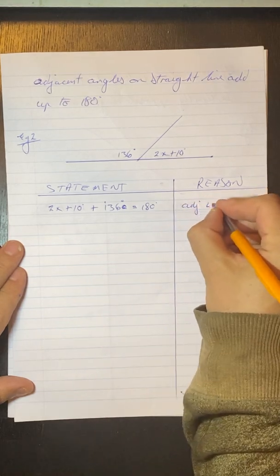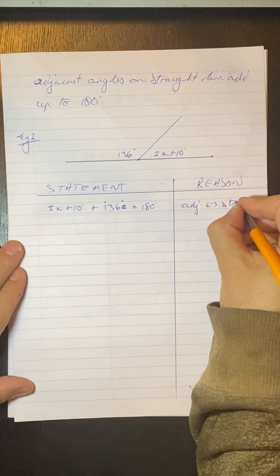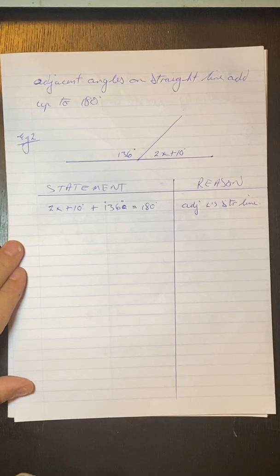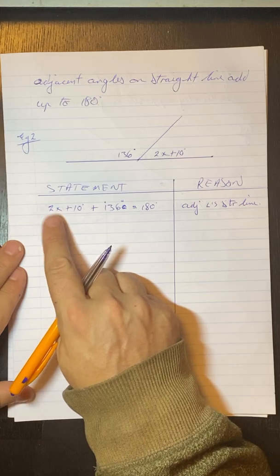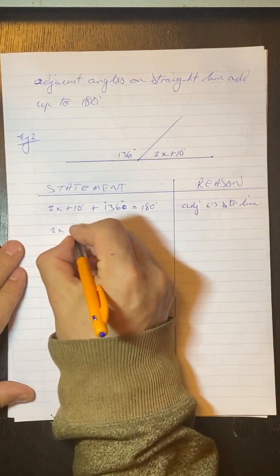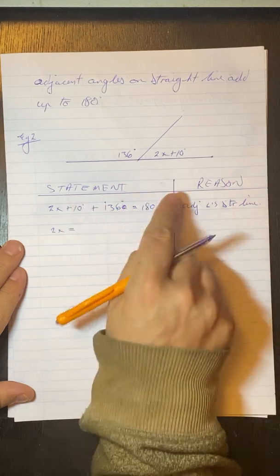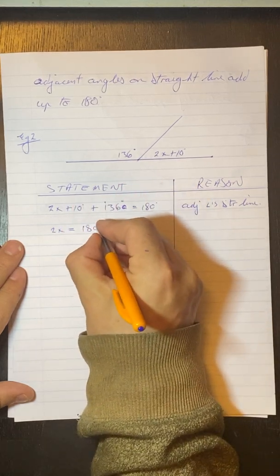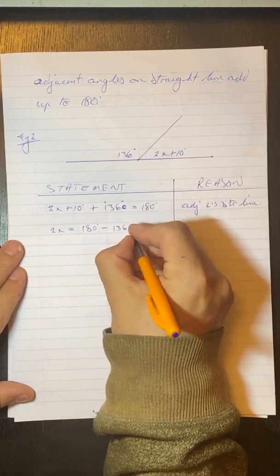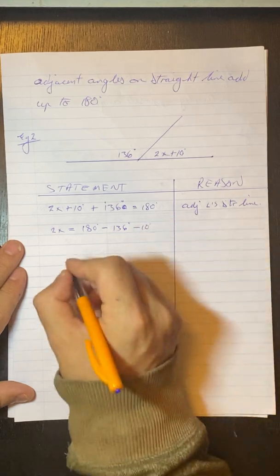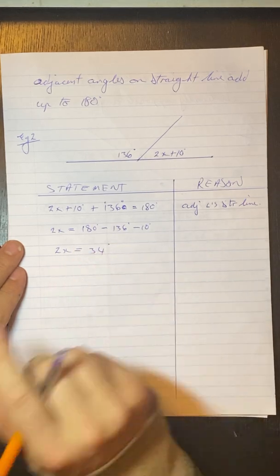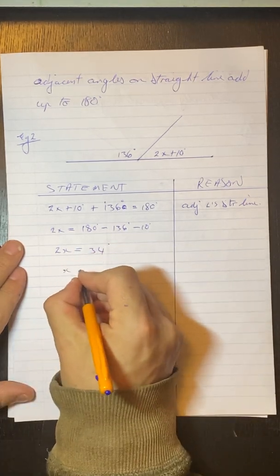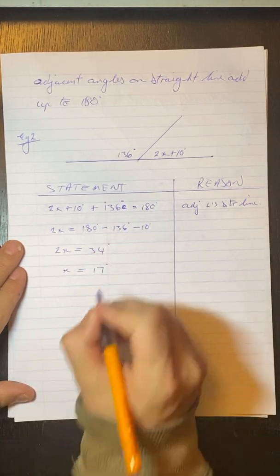And my reason for this, adjacent angle straight line. Okay, so what do we get here, grade 9? So we get 2x is equal to, take that and that to the other side, and we get 180 minus 136 minus 10, and we get 2x is equal to 34. Divide both sides by 2, and we get x is equal to 17 degrees.